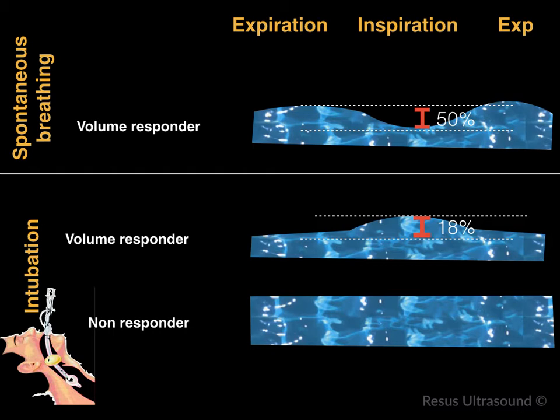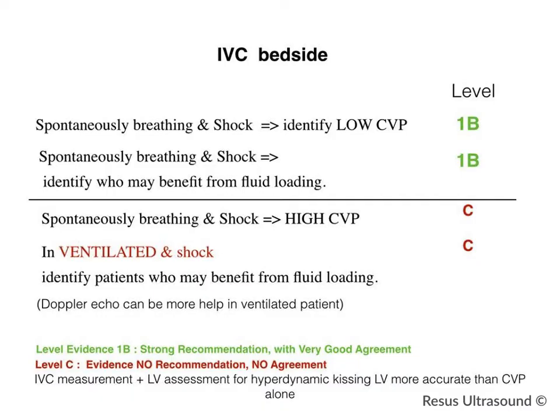To summarize the difference between spontaneous breathing and intubated patients: in spontaneous breathing volume responders, the IVC collapses and is small. In intubated patients, contrast to collapsed IVC, they show a distended IVC. The easy rule: if the IVC is very thin, the patient is volume responsive and you should give fluid.